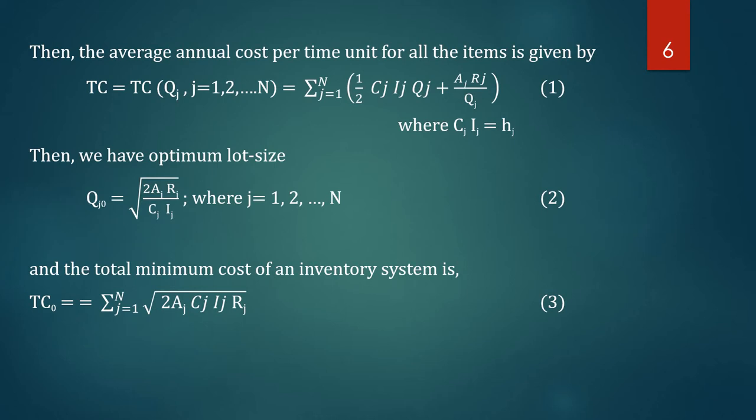The average annual cost per annum is given by TC equal to the sum over j from 1 to N of the cost for each item, which equals the summation of holding cost and ordering cost for the j-th item.